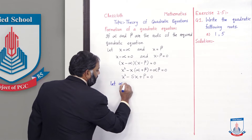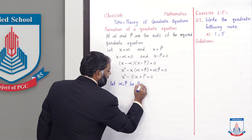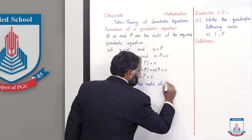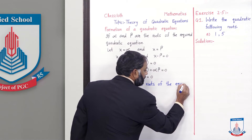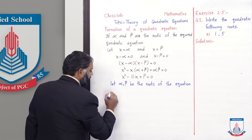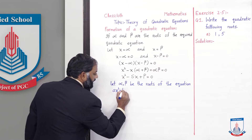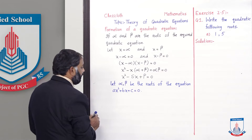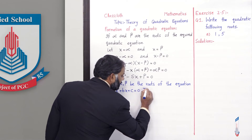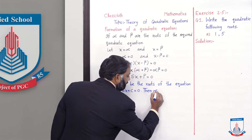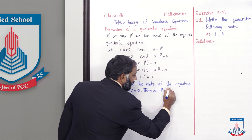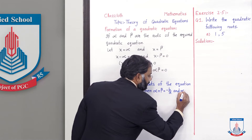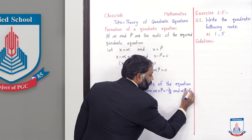Let alpha and beta be the roots of the equation ax² + bx + c = 0. This is the standard form of quadratic equation. Then alpha + beta = -b/a, which we studied in the last lecture, and alpha·beta = c/a.